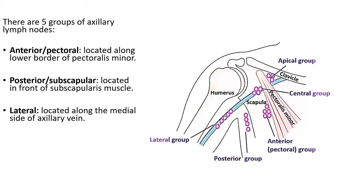The lateral group is present along the lateral wall of the axilla, just medial to the axillary vein. The central group is located in the center — at the base of the axilla in the fibrofatty tissue.